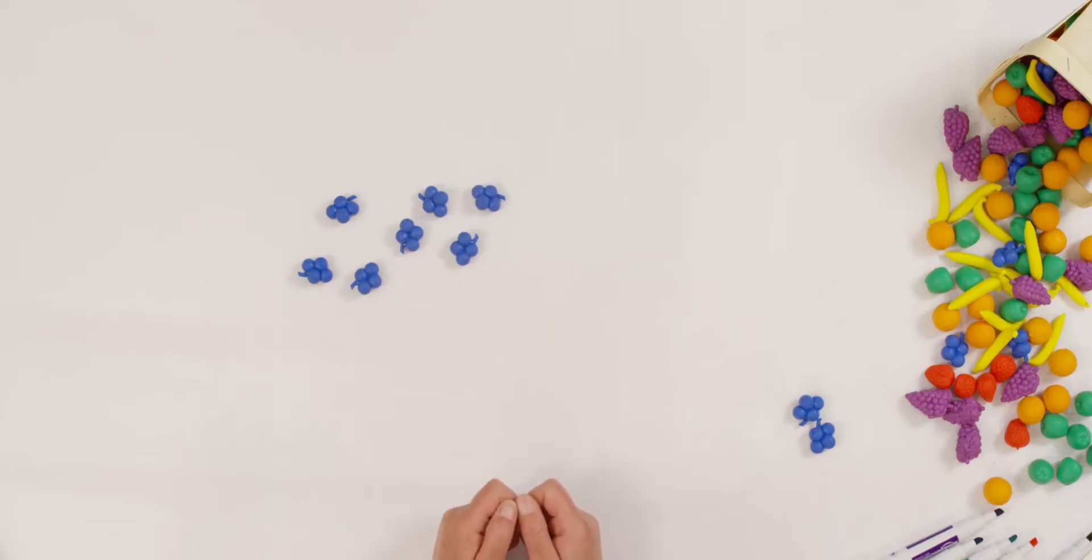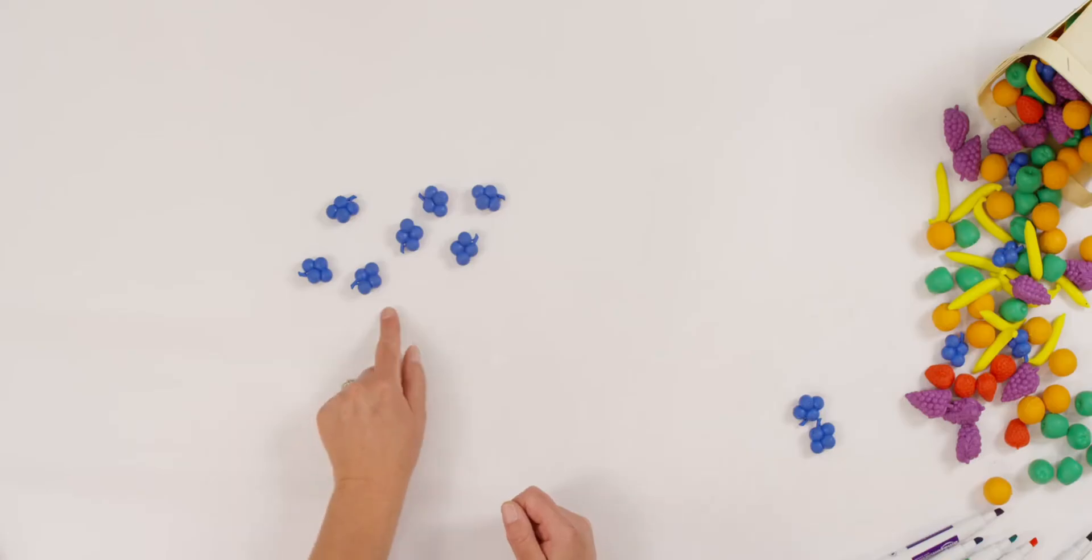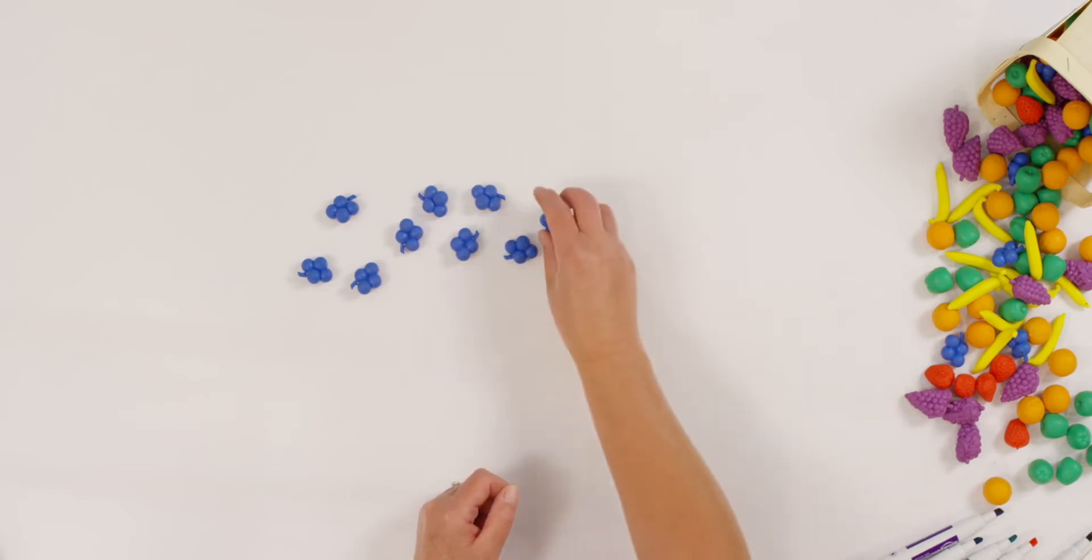So what I'm going to do is I'm going to tell you a story and then you can show that with your counters at home. So I was at the farmer's market picking up some blueberries and I saw seven blueberries on the table. One, two, three, four, five, six, seven. And then I added two more. Can you show that with your counters?